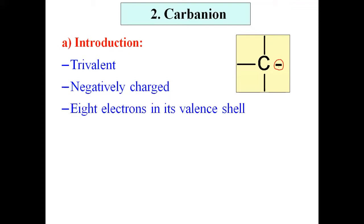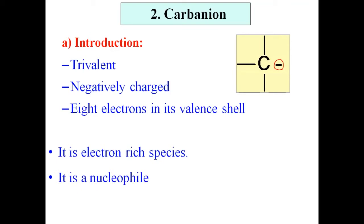In a carbanion, there are eight electrons in its valence shell. Thus, a trivalent negatively charged carbon species in which carbon has eight electrons in its valence shell is called a carbanion. Because carbon has a negative charge, it is an electron-rich species. Due to the negative charge, in a chemical reaction it acts as a nucleophile — it is an example of a nucleophilic reagent. It has a tendency to donate its electron pair to form a covalent bond with another atom.